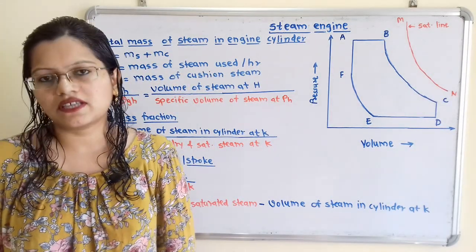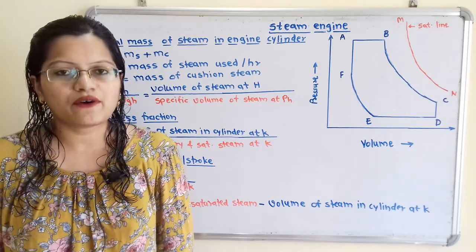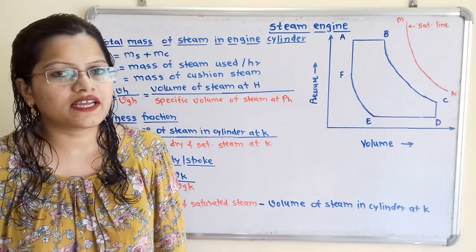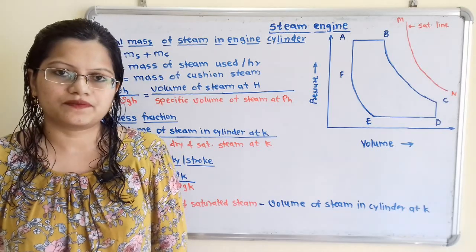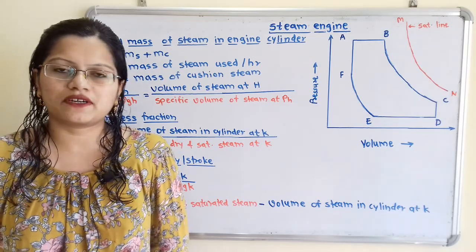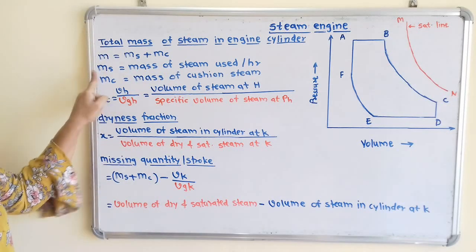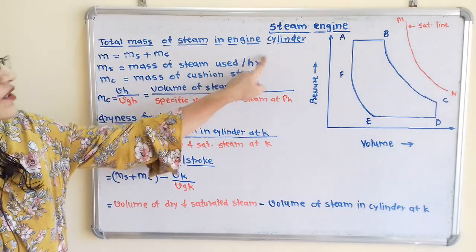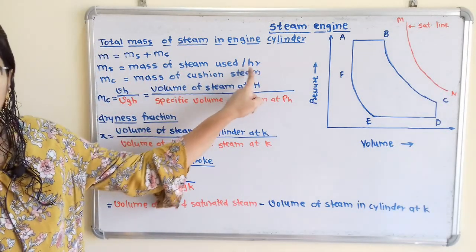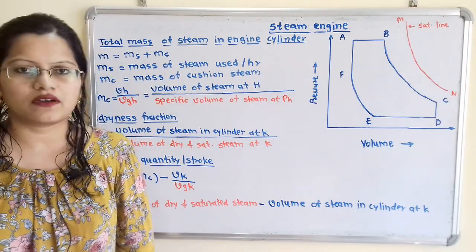How to measure ms? For that, we have to measure the mass of steam condensed in the condenser over a specified period of time. The period of time for ms is already mentioned — that is per hour, so the period of time is equal to 1 hour.